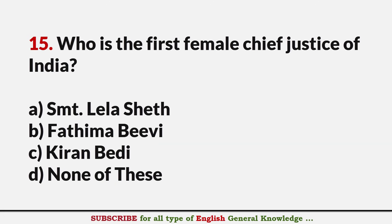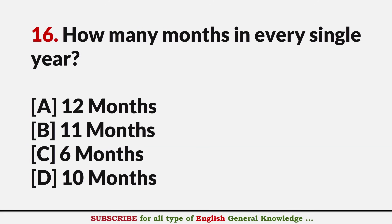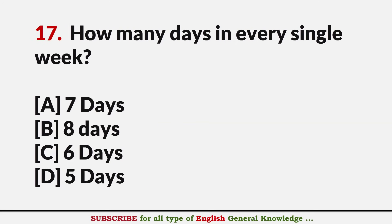Who is the first female Chief Justice of India? Answer B: Fatima Bibi. How many months are in every single year? Answer A: 12 months. How many days are in every single week? Answer A: 7 days.